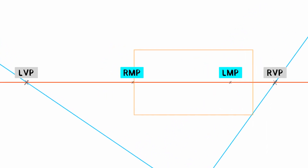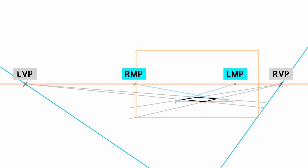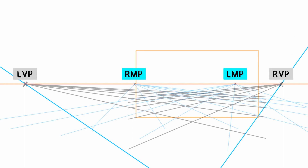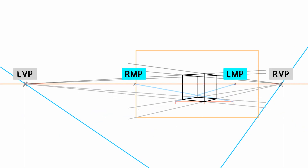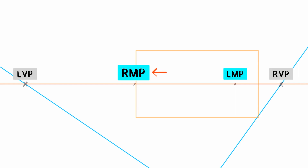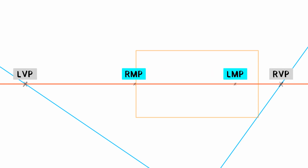These measuring points can help us make a perfect square, a square grid, and a cube with all equal sides. Notice that the right measuring point is on the left and the left measuring point is on the right — this can be confusing.